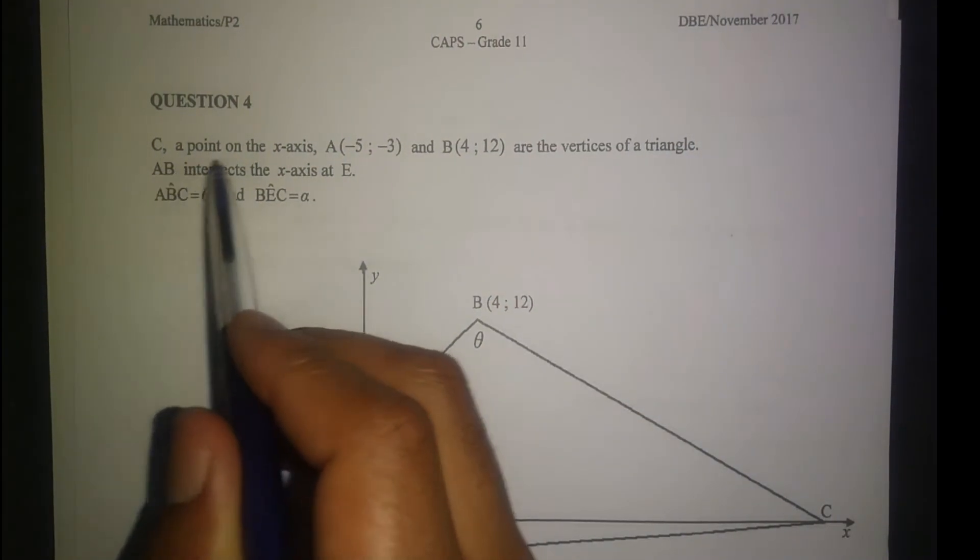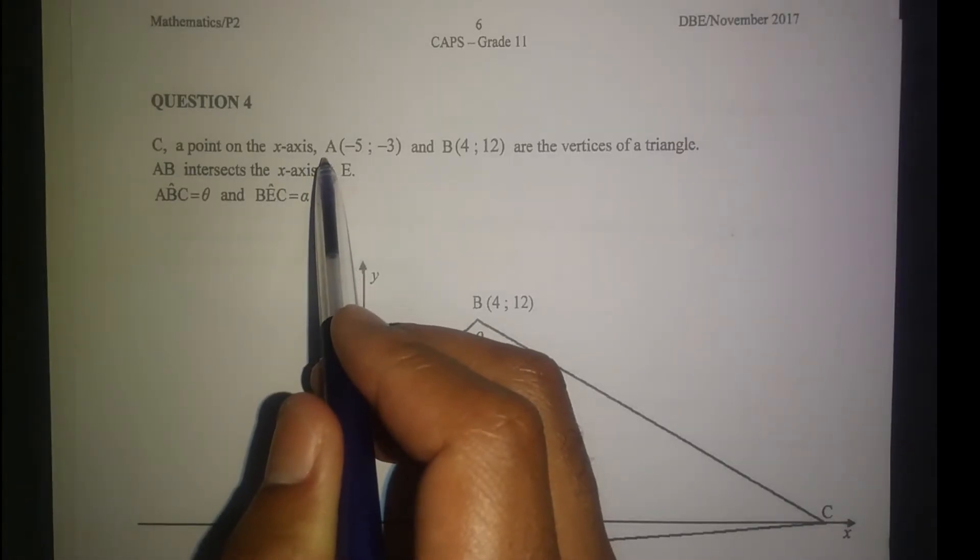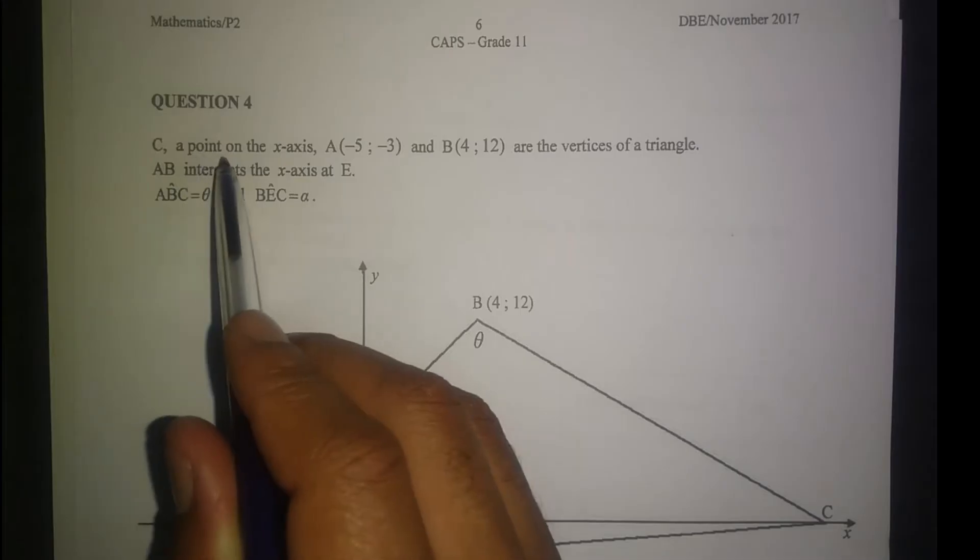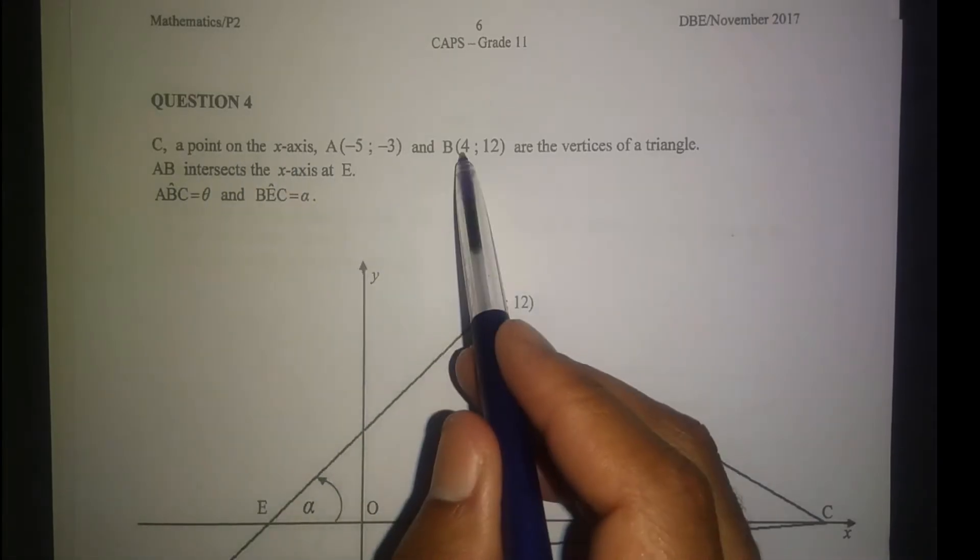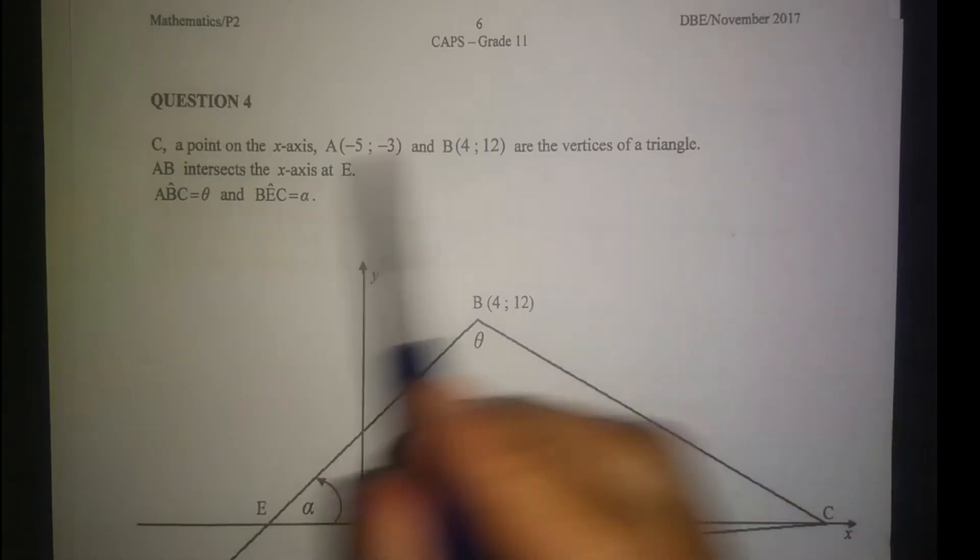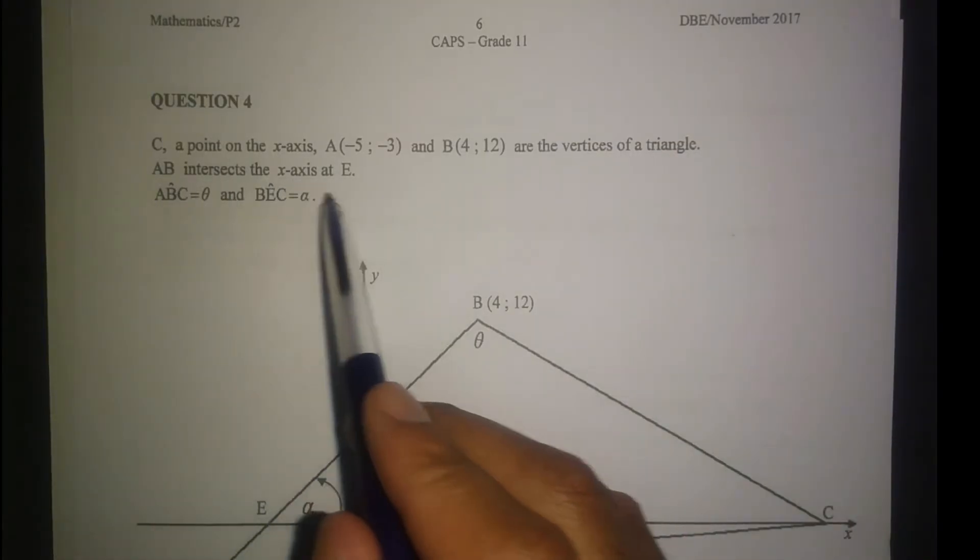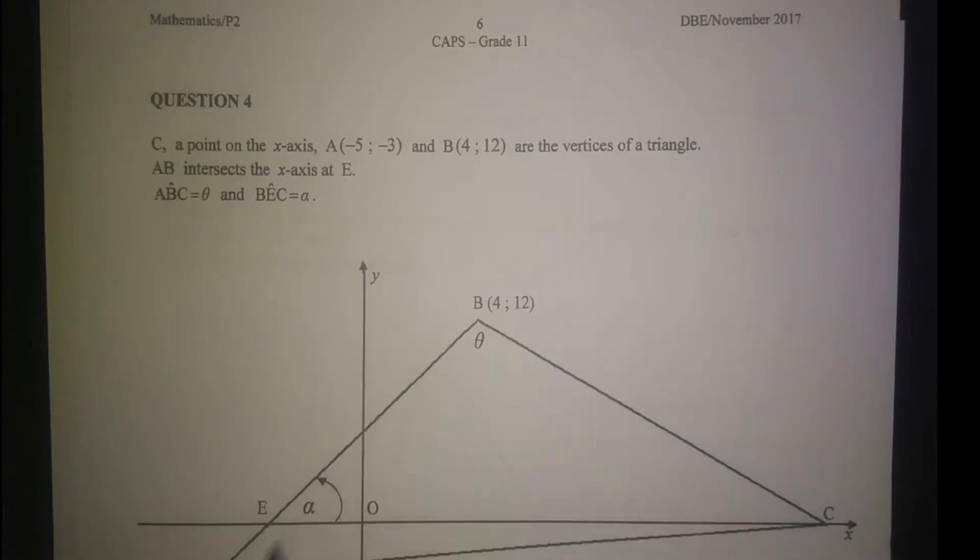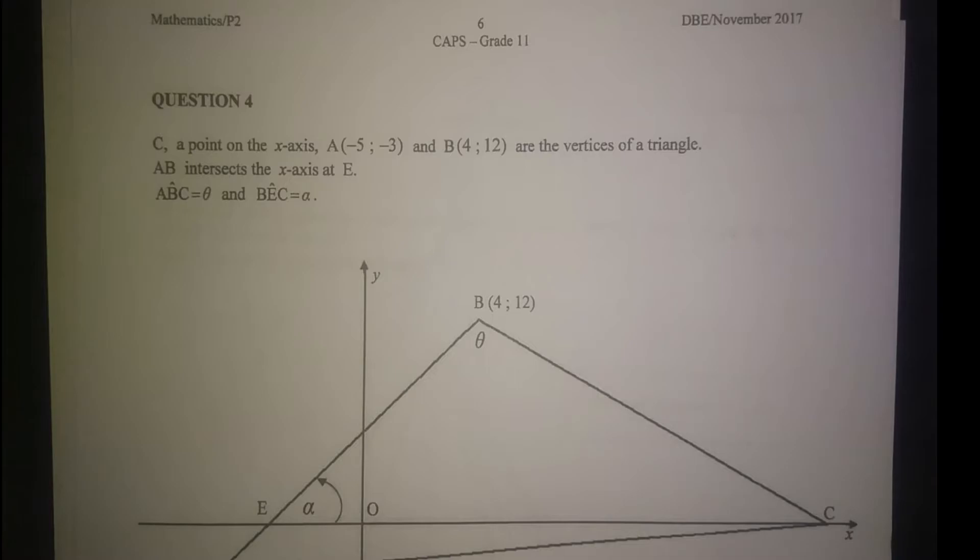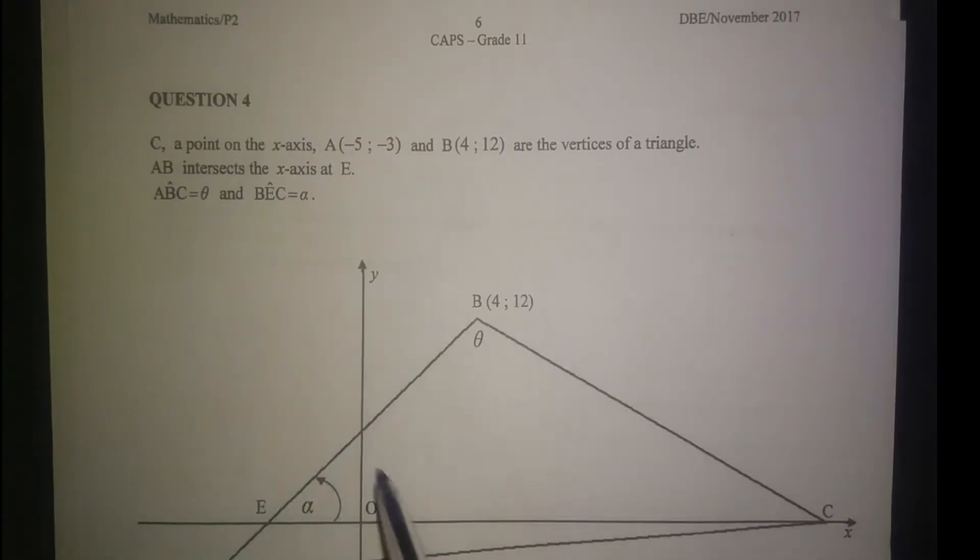C is a point on the x-axis. A and B are the vertices of a triangle. AB intersects the x-axis at E. So therefore E is the x-intercept of this line AB. Angle BEC is equal to alpha.